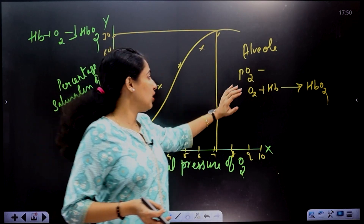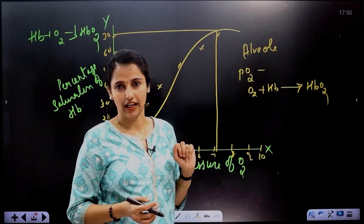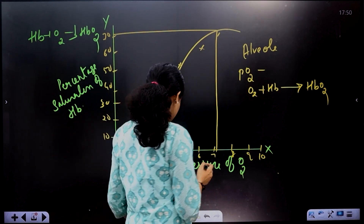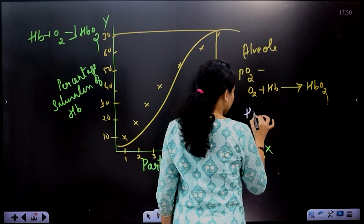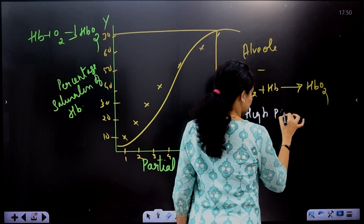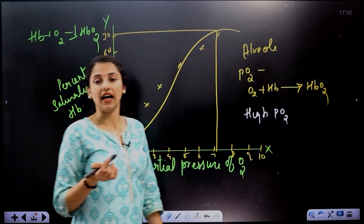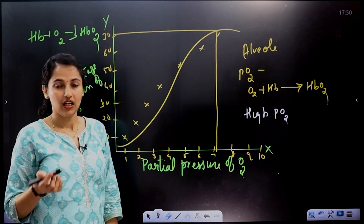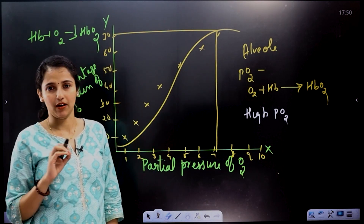This is called high partial pressure of oxygen. The first condition for oxyhemoglobin formation is high partial pressure of oxygen. The second factor is low partial pressure of carbon dioxide.